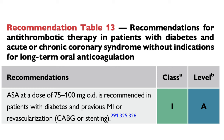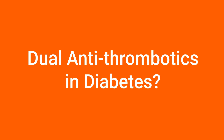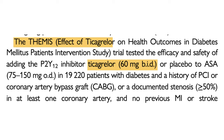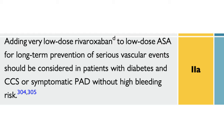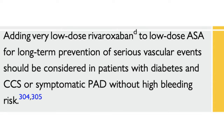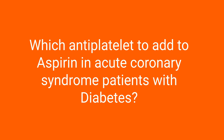Aspirin is recommended for all patients with chronic stable disease at a dose of 75 to 100 mg per day, comparable in efficacy to 300 mg. In patients with chronic stable disease, adding ticagrelor to aspirin would increase the risk of bleeding more than any benefit, so it is not recommended. However, rivaroxaban 2.5 mg twice daily in addition to aspirin — as in the COMPASS trial — reduced major cardiovascular events with a slight increase in bleeding, and can be considered in patients with diabetes, chronic coronary disease, or symptomatic peripheral arterial disease without high bleeding risk.